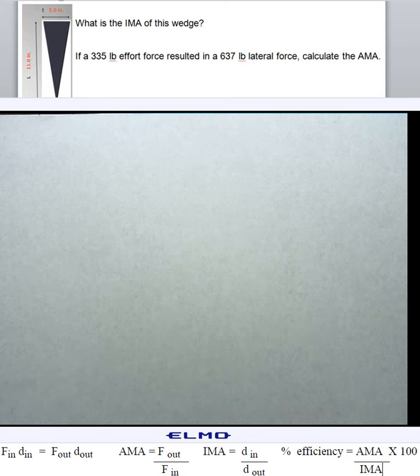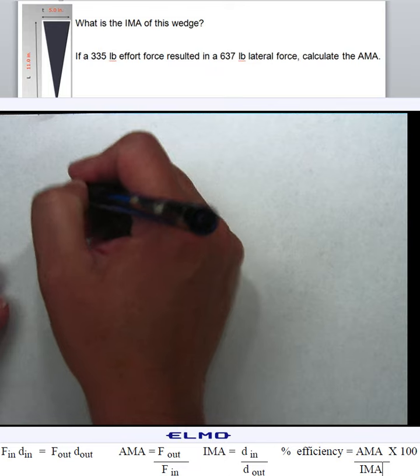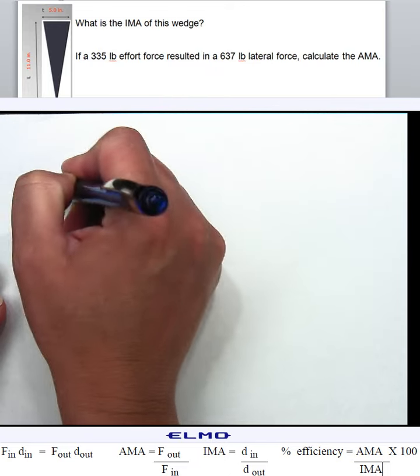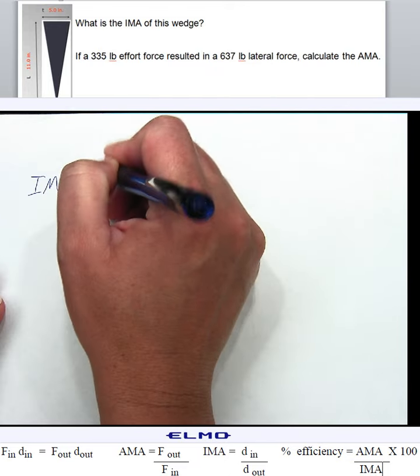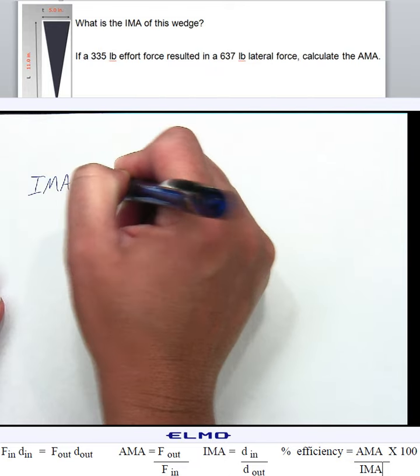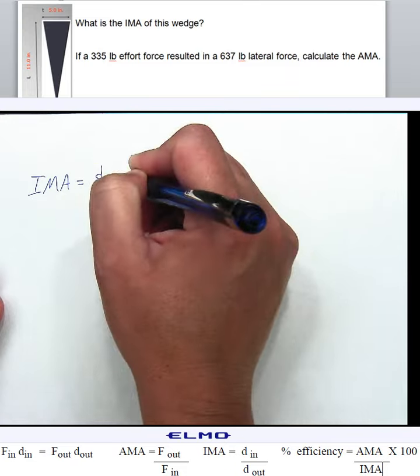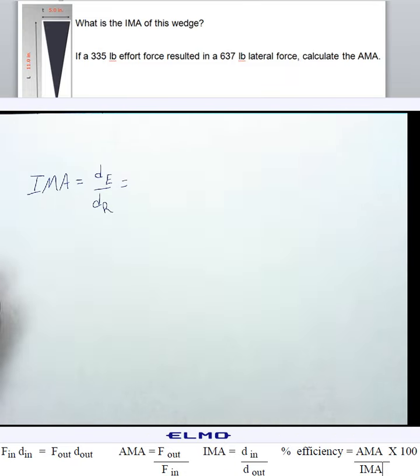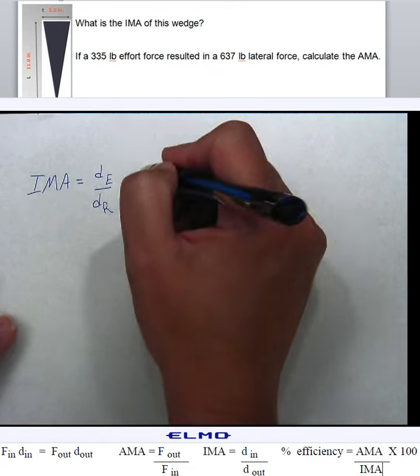It says, what is the IMA of this wedge? IMA equals distance of our effort over distance of our resistance. In this case, the distance of our effort is always that length.